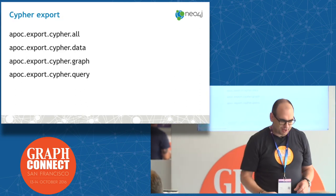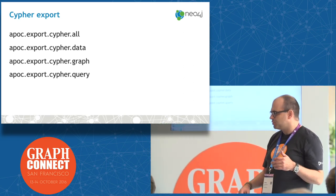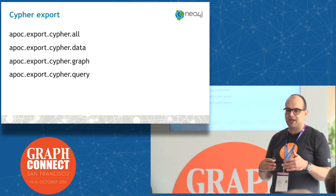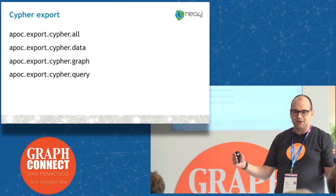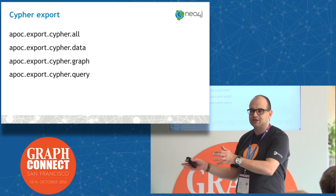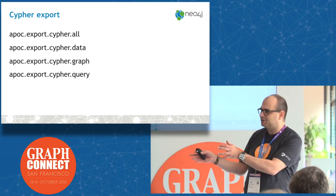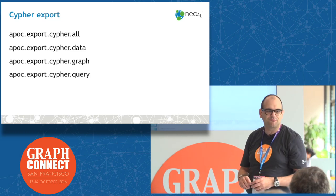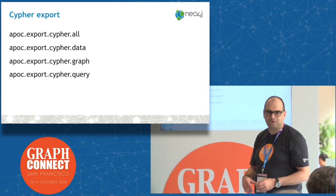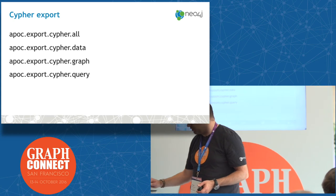The same way we can persist the graph into GraphML, we can also export the graph into Cypher, which means you get a set of CREATE or MERGE statements that rebuild that graph structure potentially in another database. So if you need to replicate a part of your graph into a new Neo4j instance, that is probably something you want to use. You can export the full graph or partially based on a Cypher query — just look up the documentation for that.